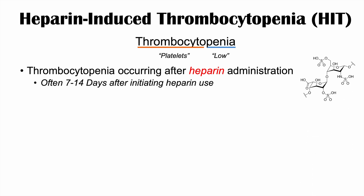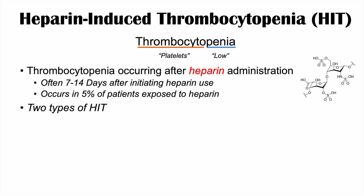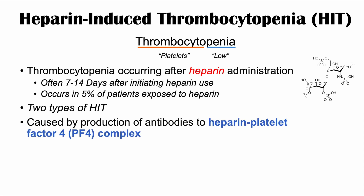What we normally see is that the thrombocytopenia occurs about 7 to 14 days after initiating heparin use. This is not always true, but for the most part, when we're trying to diagnose it, we use these numbers. It occurs in about 5% of patients exposed to heparin. There are actually two types of HIT, which we'll talk about in the next slide.